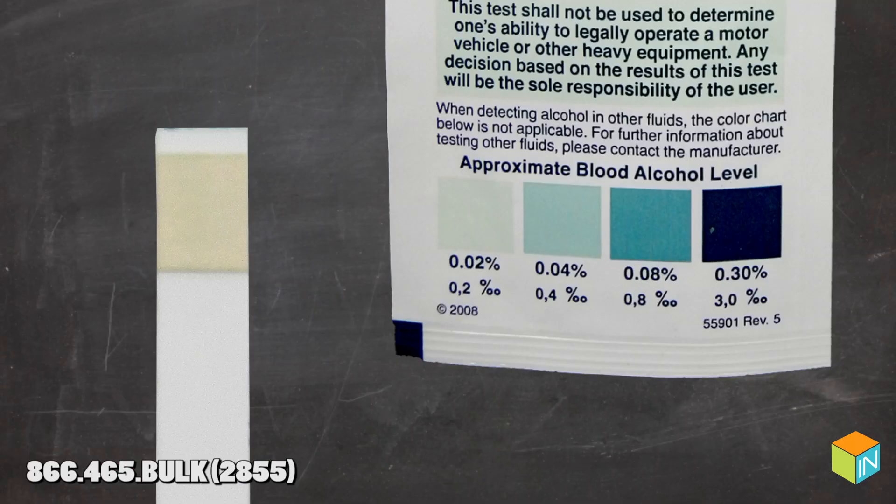Step 2: At 2 minutes, compare color of test pad to the color chart on the test package. Step 3: Estimate the BAC by reading the number printed below the color block that best matches the color of the test pad.